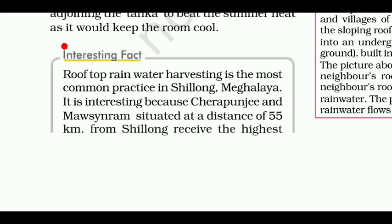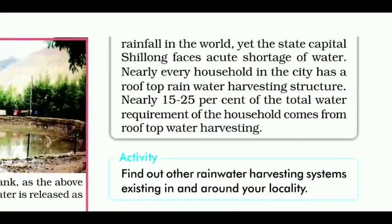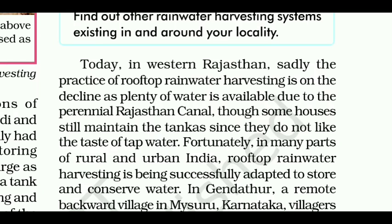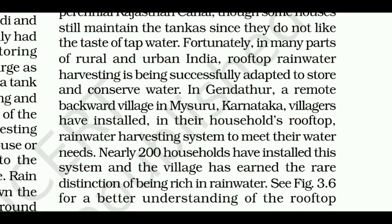One interesting fact: rooftop rainwater harvesting is the most common practice in Shillong, Meghalaya. Interestingly, Cherrapunji and Mawsynram, situated just 55 km from Shillong, receive the highest rainfall in the world, yet the state capital Shillong faces acute water shortages. Nearly every household in the city has a rooftop rainwater harvesting structure, contributing 15–25% of the total water requirement. Today, in Western Rajasthan, the practice is sadly on the decline as water is available from the perennial Rajasthan Canal, though some houses still maintain tankas as they prefer the taste of rainwater. Fortunately, in many parts of rural and urban India, rooftop rainwater harvesting is being successfully adapted.